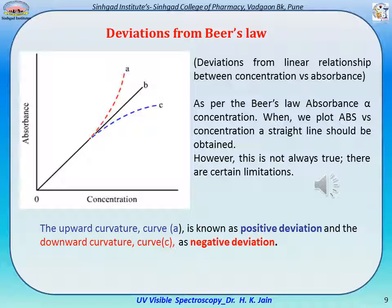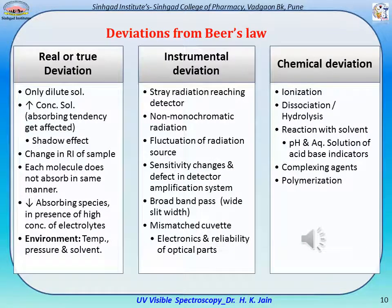The upward curvature (curve A) is known as positive deviation, and the downward curvature (curve C) is known as negative deviation. Three types of deviations are observed: real deviation, instrumental deviation, and chemical deviation.